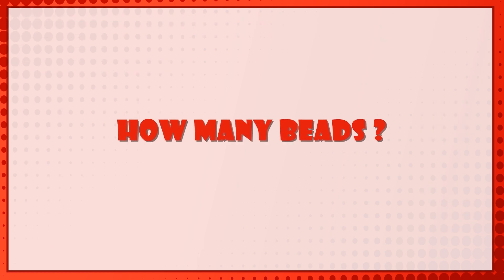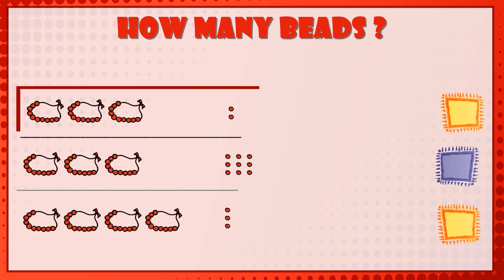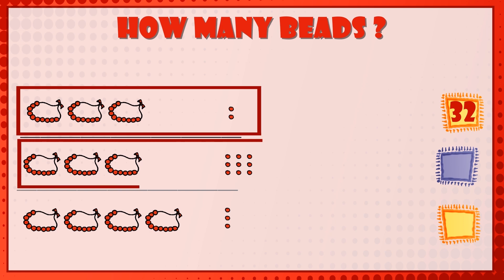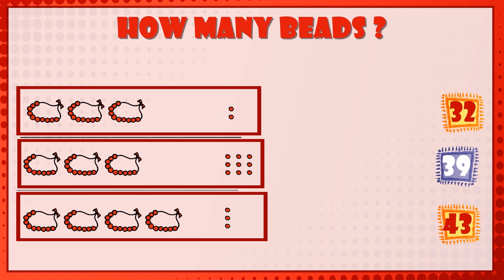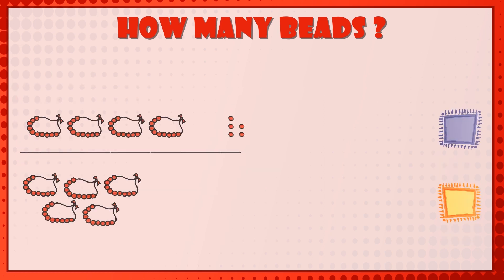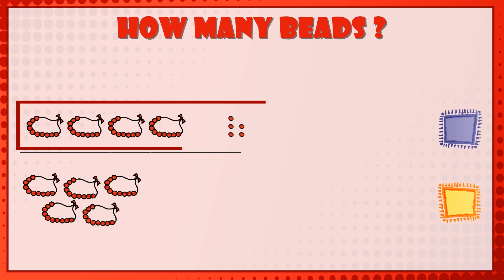How many beats? Three tens and two beats is equal to 32 beats. Three tens and nine beats is equal to 39 beats. Four tens and three beats is equal to 43 beats. Four tens and five beats is equal to 45 beats.